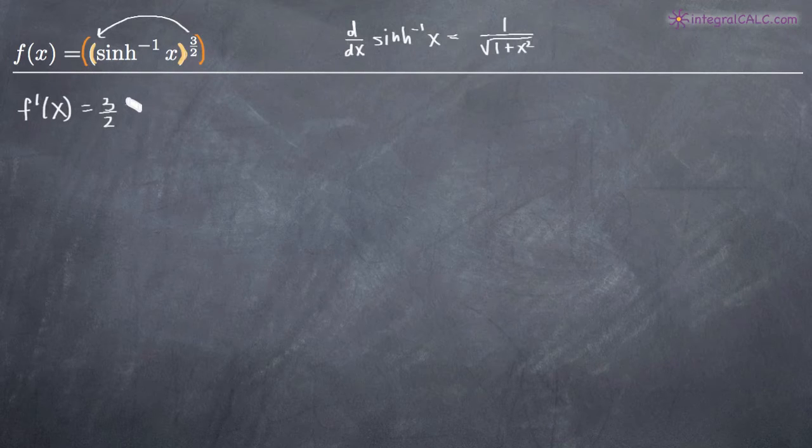So we're not going to deal with the inverse hyperbolic sine function right now. We're just going to leave that as it is. But we've multiplied this 3 halves out in front and now we need to subtract 1 from the exponent. So 3 halves minus 1 is 1 half. So that is the derivative of the outside function.